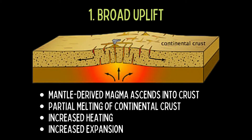The initial stage of continental rifting commonly includes a broad uplift of the surface as mantle-derived magma ascends into the crust. That magma can melt parts of the continental crust, producing additional magma. Increased heating causes increased expansion, which translates to further uplift, but that uplift is short-lived because the crust is being stretched and pulled apart at divergent boundaries, so it will eventually begin to thin.